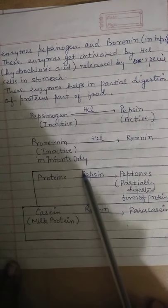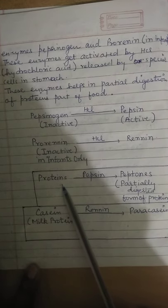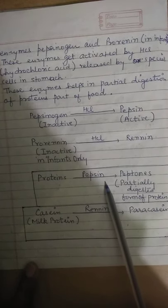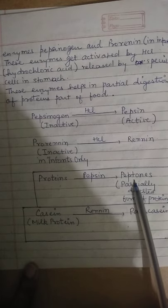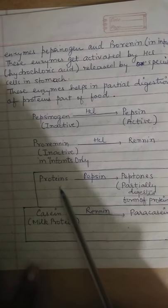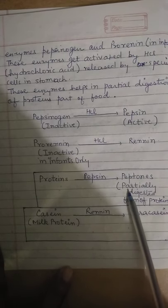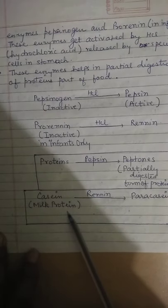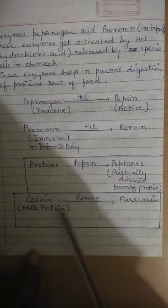Inside the stomach, the protein part of the food is partially digested. Pepsin enzyme converts proteins into smaller units called peptones. Proteins are complex foods and peptones are not completely simplified, so this is called the partially digested form of protein. Similarly, the protein in milk, called casein, is acted upon by the enzyme renin and converted to para-casein, which is also a partial digestion.